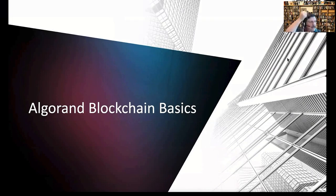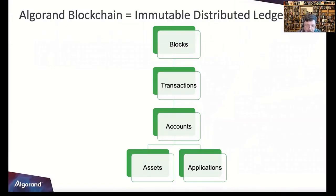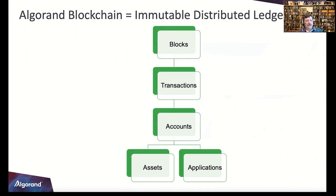Let's get into Algorand basics. An Algorand blockchain is like an immutable, distributed ledger — everybody's got a copy. There are only a handful of record types: blocks are burned every five seconds, and during those five seconds, transactions get written to the blockchain. It's write-once read-only. Transactions are associated with accounts, and each account has assets and applications — smart contracts. Assets are your tokens.